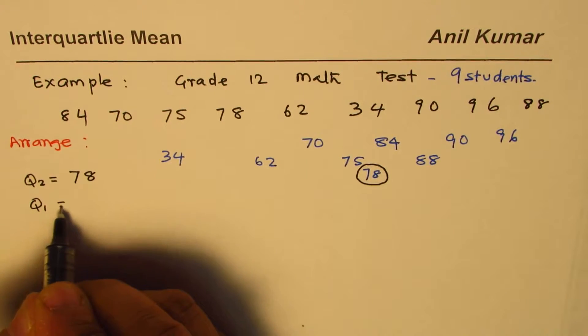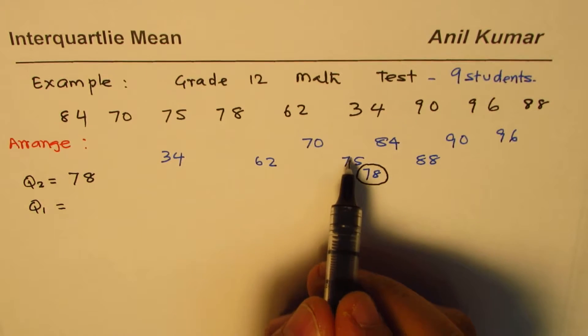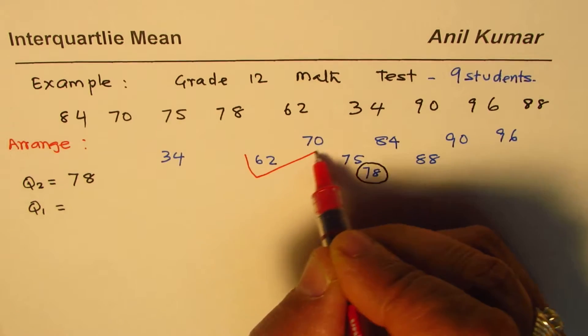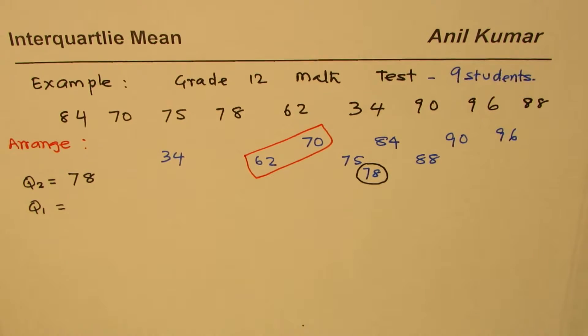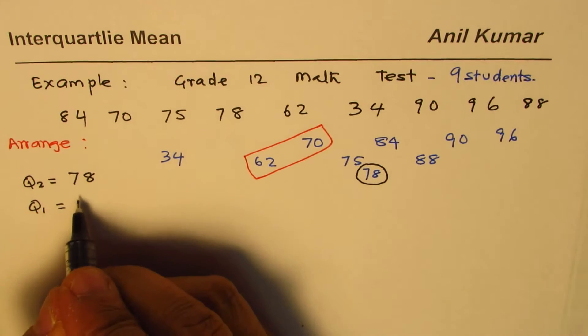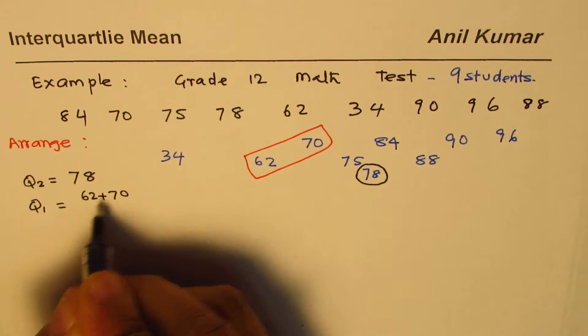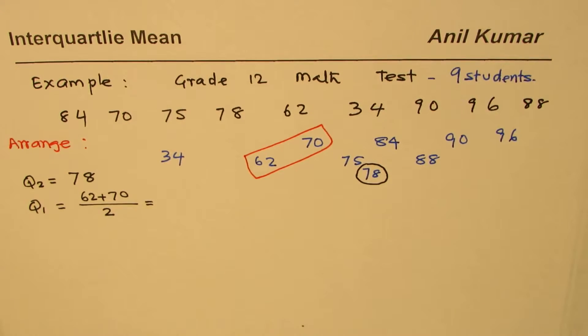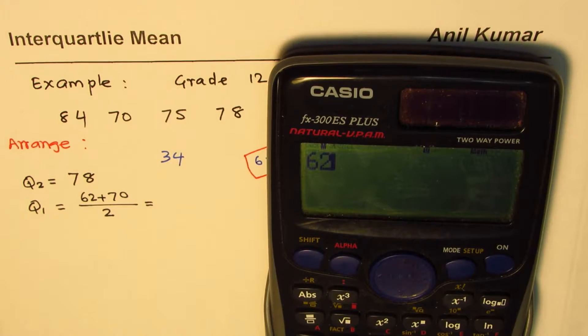How about first quartile? First quartile is the middle value of these. In this particular case we have these two numbers, so we can find average. So we have 62 plus 70 divided by 2, and that gives us 66.